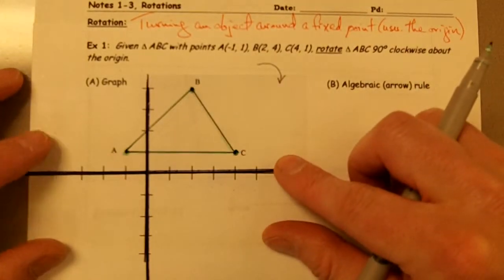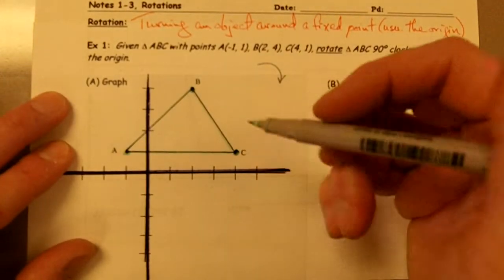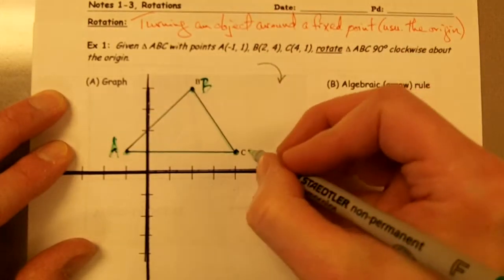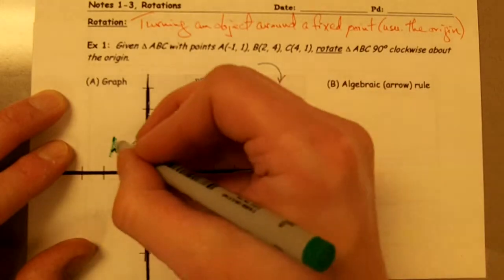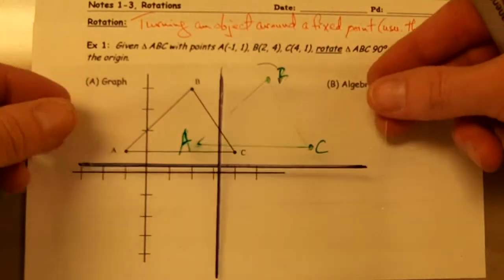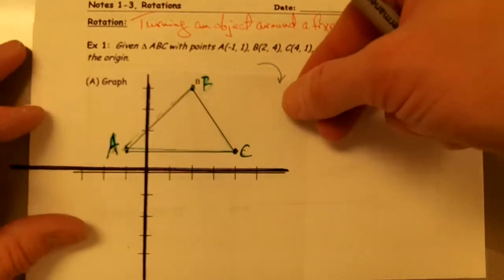All right, so now I have my triangle. Let me go ahead and label these points here. This is point A, this is point B, and this is point C.